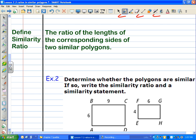This is a definition I want you to know. It says define the similarity ratio. This is the ratio of the lengths of the corresponding sides of two similar polygons. Let's say I have two triangles and they're similar. They have the same angles.